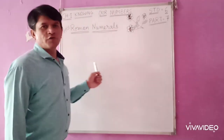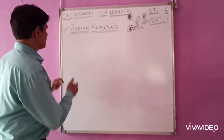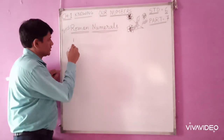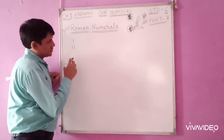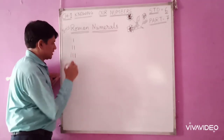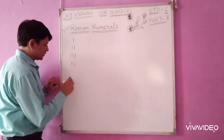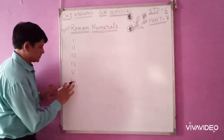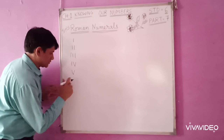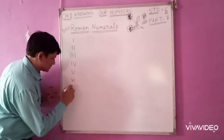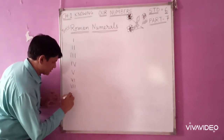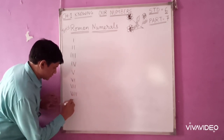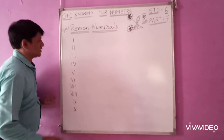Now we are going to write 1 to 50. I is 1. II is 2. III is 3. IV is 4. V is 5. VI is 6. VII is 7. VIII is 8. IX is 9. X is 10.